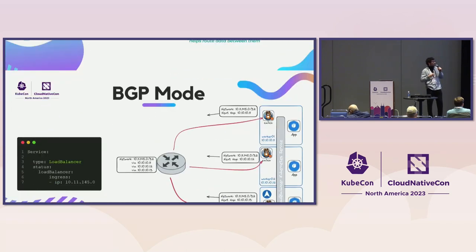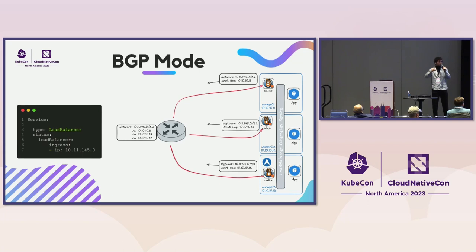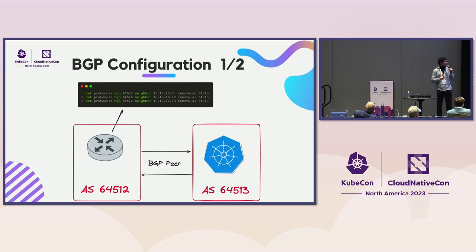In our cluster setup, only the worker nodes will establish BGP sessions—specifically, the Calico node on each worker node. Our router will have routes via multiple paths, one from each Kubernetes worker node. Starting with the router configuration: since we use a VyOS router, we use the set protocols bgp command to configure the autonomous system and establish the peer connection. All worker node IP addresses are attached to the same remote autonomous system.